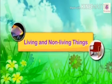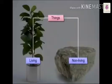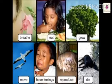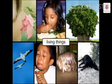Living and Non-Living Things. All things which are present in this world can be classified into living and non-living things. Things that breathe, eat, grow, move from one place to another, have feelings and reproduce the young ones and die are called living things.